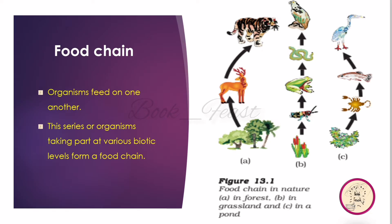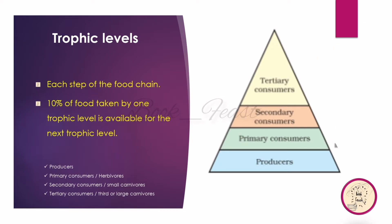Decomposers break down dead matter. In a forest, there is a tree, a frog, a snake, and an eagle — forming a food chain. The food chain begins with Producers, then Primary Consumers which are herbivores, then Secondary Consumers which are small carnivores, and Tertiary Consumers which are large carnivores.